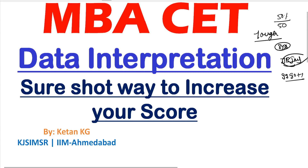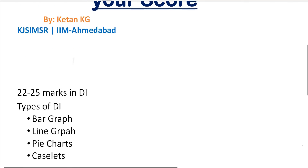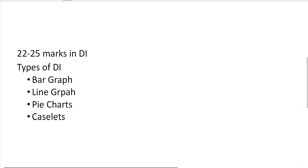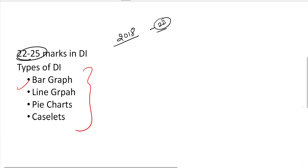The problem is how do you improve your score as far as your DI is concerned? The marks you will be getting from DI are around 20 to 25. In 2018, there were around 22 questions in the DI segment. Normal topics that come in DI include bar graph, line graph, pie chart, and case lets. Something that has not been asked much is the radar graph — I will make a video about radar graph, because understanding that entire graph is a major problem, not solving it.